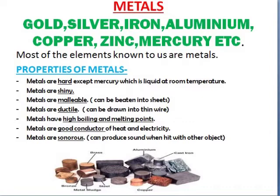What are the properties of metals? Metals are hard, except mercury which is liquid at room temperature — mercury is an exceptional case. All other metals are hard; you cannot bend them very easily even if you apply force. Second, metals are shiny — they reflect light. Metals are also malleable, meaning they can be beaten into sheets, such as aluminium sheets and steel sheets.